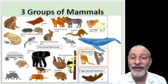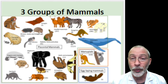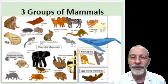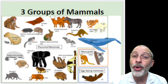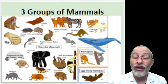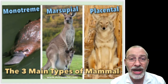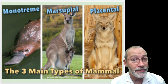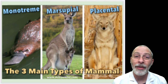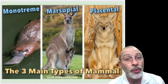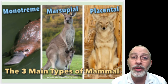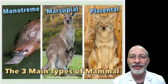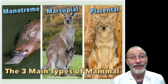The second group is the marsupials — like kangaroos, koala bears, and possums. The third group is the egg-laying mammals, the most rare, only found in Australia. So the three main types of mammals are: monotremes (egg layers), marsupials (pouched mammals), and placental mammals. We're going to explore each of these three groups and then I'll show you some videos about them.